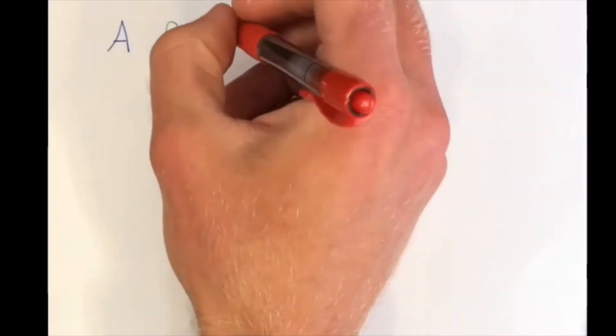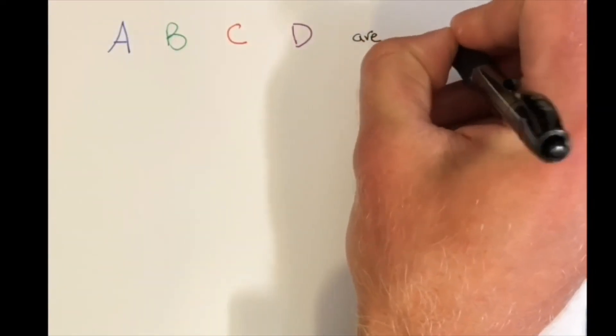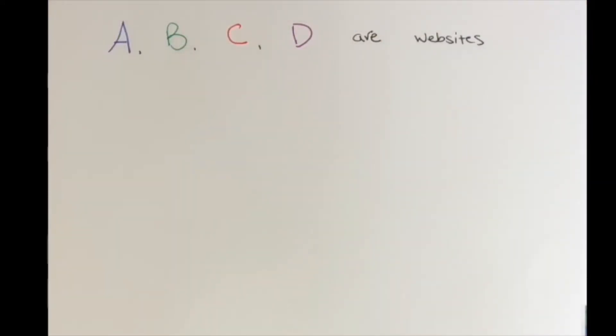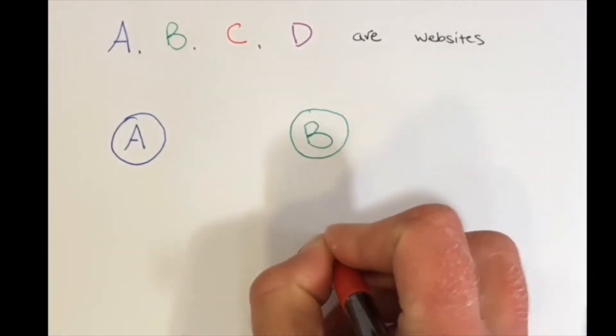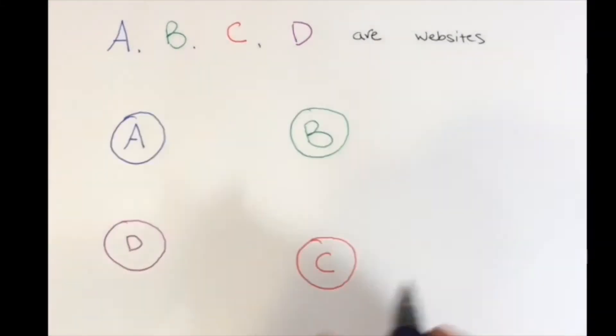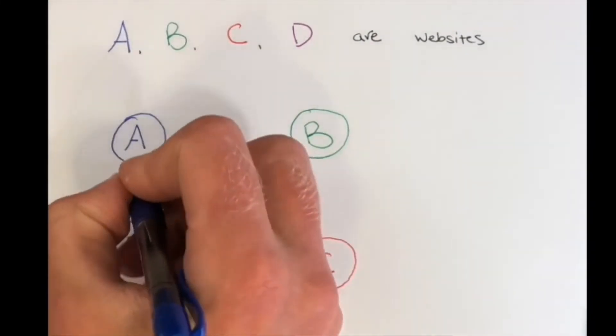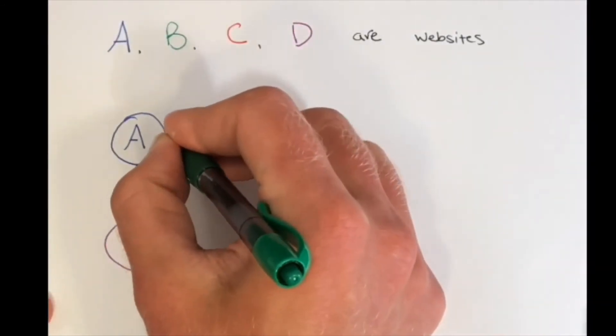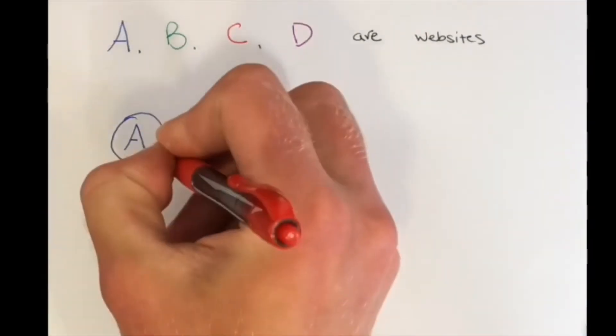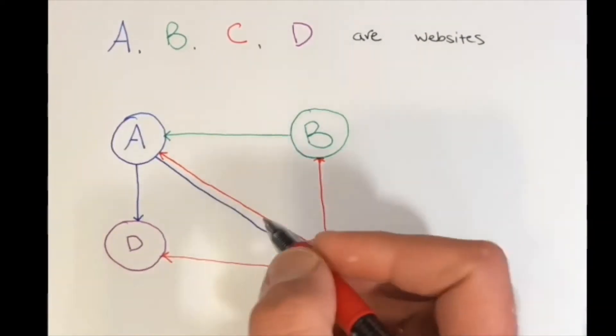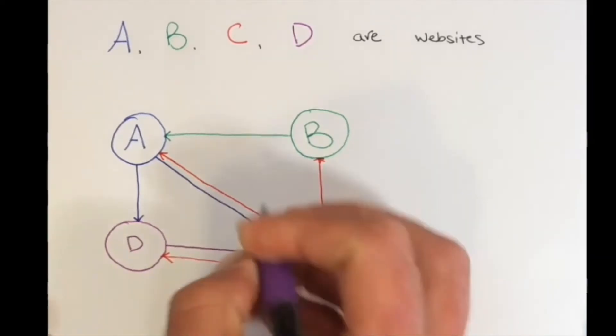Now we can look at an example. In this example, A, B, C, and D are websites. Now we can draw a graph, where each circle represents a website. So we have four circles, A, B, C, and D. We can draw arrows between these circles to represent links between the websites. We see A links to two websites, B links to one, C links to three, and D links to two websites.